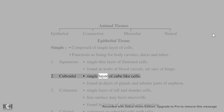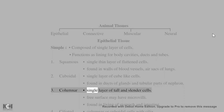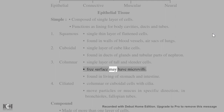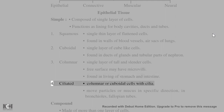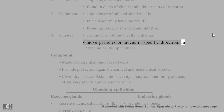Cuboidal epithelium: single layer of cube-like cells, found in ducts of glands and tubular parts of nephron. Columnar epithelium: single layer of tall and slender cells; free surface may have microvilli; found in lining of stomach and intestine. Ciliated columnar or cuboidal cells with cilia move particles or mucus in a specific direction, found in bronchioles and fallopian tubes.